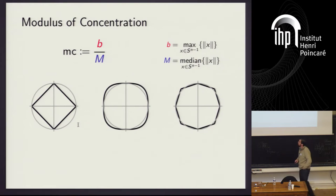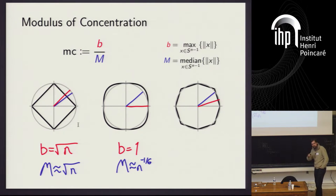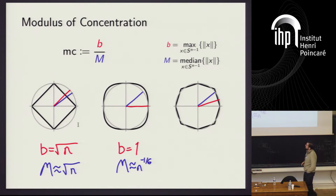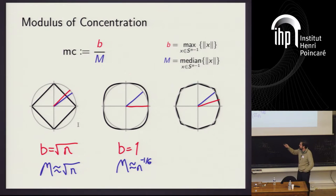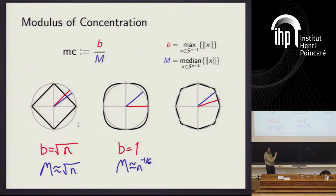Here are three different symmetric norms. The left one is L1, the middle one is L3, and the right one is some other norm. For the L1 norm, the maximum is achieved in the all-ones direction — this vector is like 1 over square root n in every coordinate, with norm square root n — and the median also has norm almost square root n. So the ratio b over m is like constant. For the L3 norm, the maximum value of 1 is achieved by a standard basis vector, while the median value is much smaller, like n to the minus 1/6. So the ratio b/m is like n to the 1/6, which is quite large.